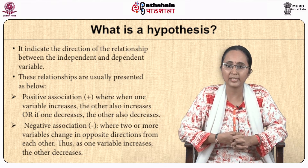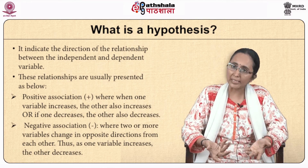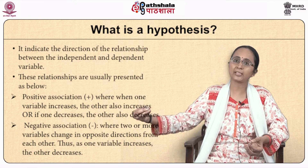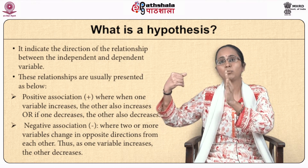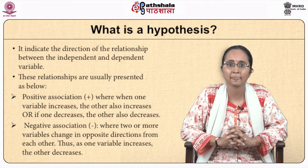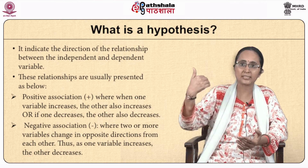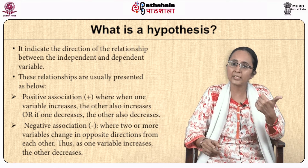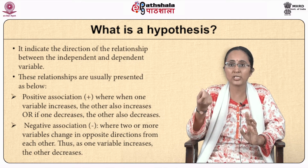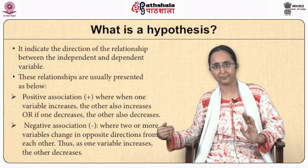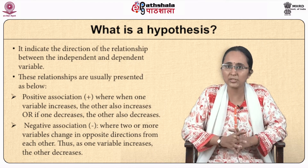The hypothesis indicates the direction of the relationship between the dependent and independent variable. You can have a positive relationship where one variable increases and the other also increases, or when one decreases the other also decreases — for example: The higher the income, the more the likelihood of higher levels of education, meaning they are in direct proportion. Or you can have a negative relationship where one increases and the other changes in the opposite direction — for example: The higher the level of maternal education, the lower the rates of infant mortality.